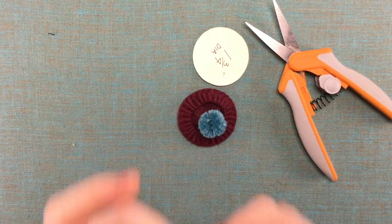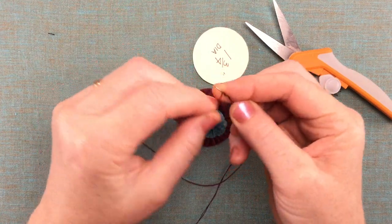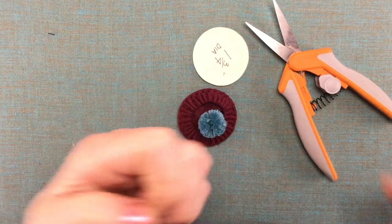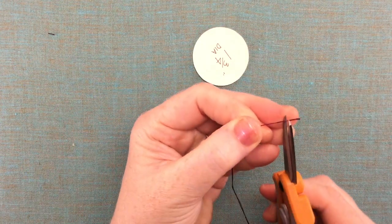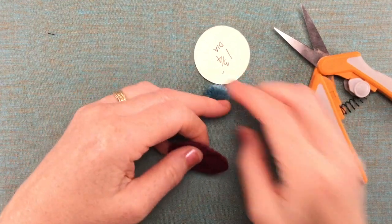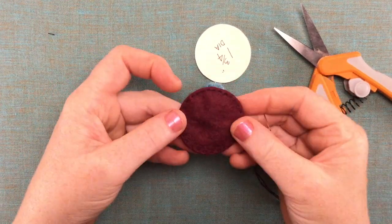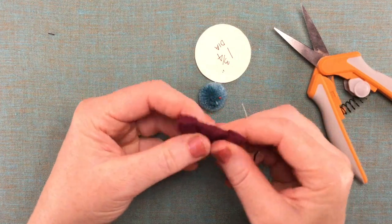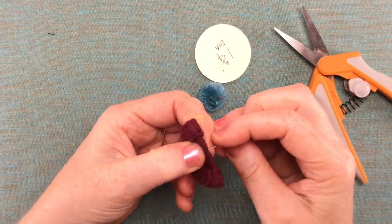Okay so that's our spot for the pom-pom. There it is. So let's thread our needle with two more strands of embroidery floss and make a knot.